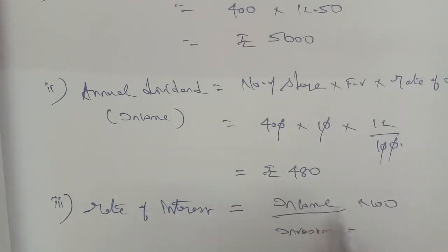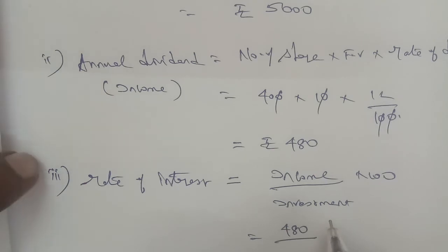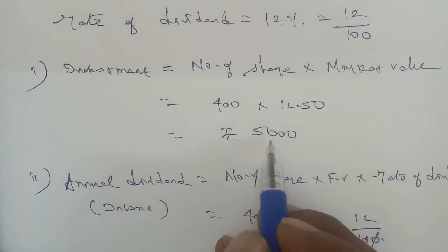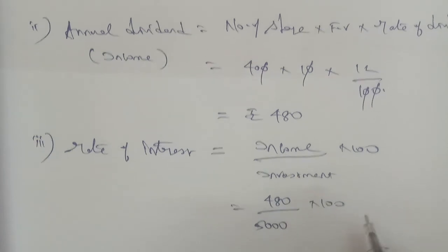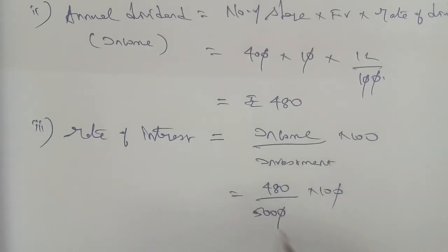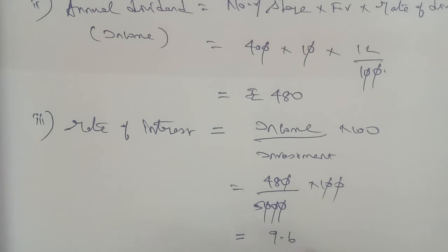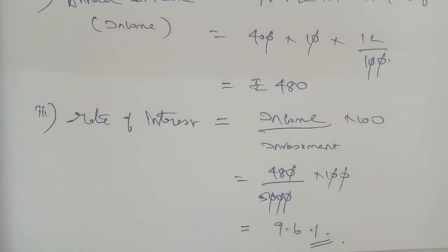Income is the annual dividend, so the answer is 480. Investment is 5,000. So this is 480 divided by 5,000 into 100. Cancel the zeros: 48 divided by 5 equals 9.6. So the rate of interest as a percentage is 9.6 percent. This is the answer. Thank you.